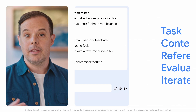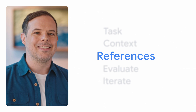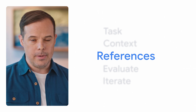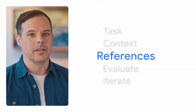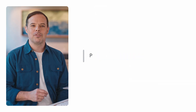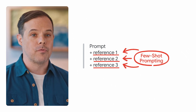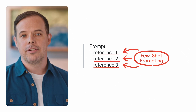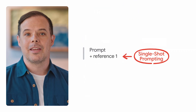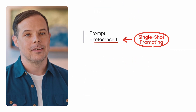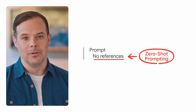So let's give references a try. References give Gen AI tools examples to work from, and that can mean asking a Gen AI tool to learn from the tone, style, or length of a given reference. Providing multiple references is also known as few-shot prompting. Shots are just references or examples, and the term is used a lot. There's also single-shot prompting, which means giving it one reference, and zero-shot prompting, which means we don't give the AI tool any references.